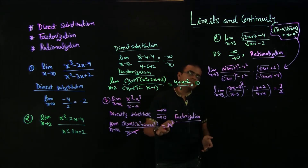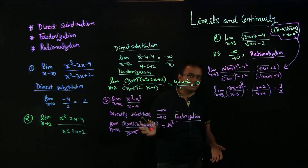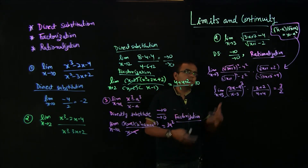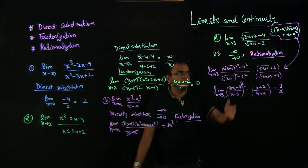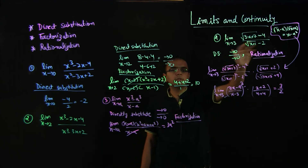So the approach is: first do direct substitution, then try factorization; if factorization is not obviously possible and you see square roots, try rationalization.